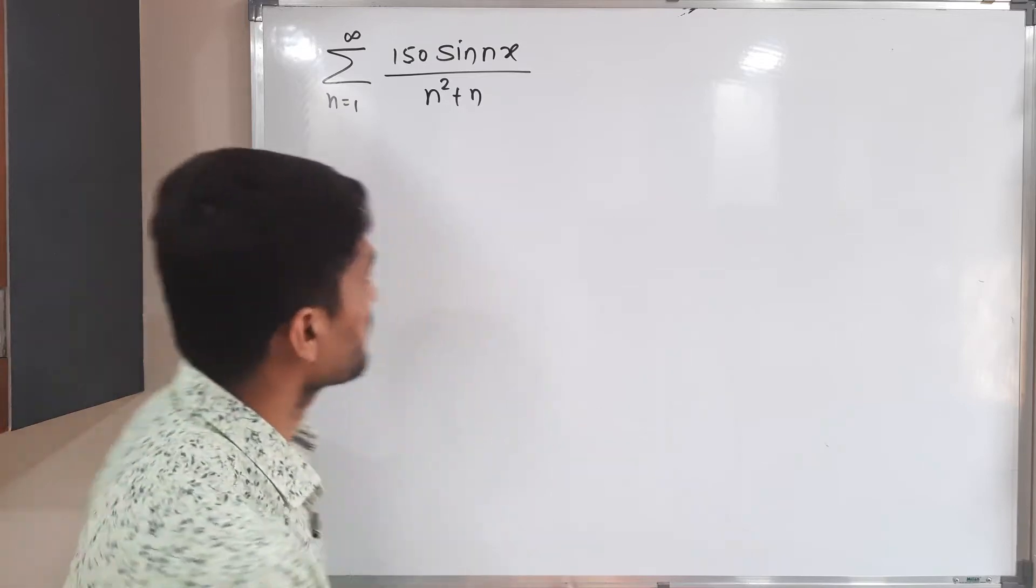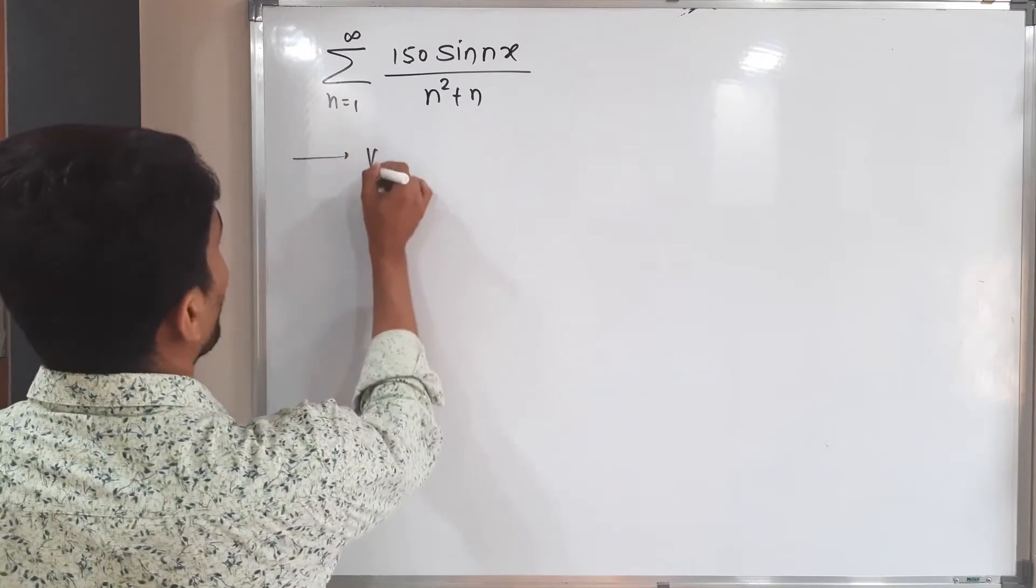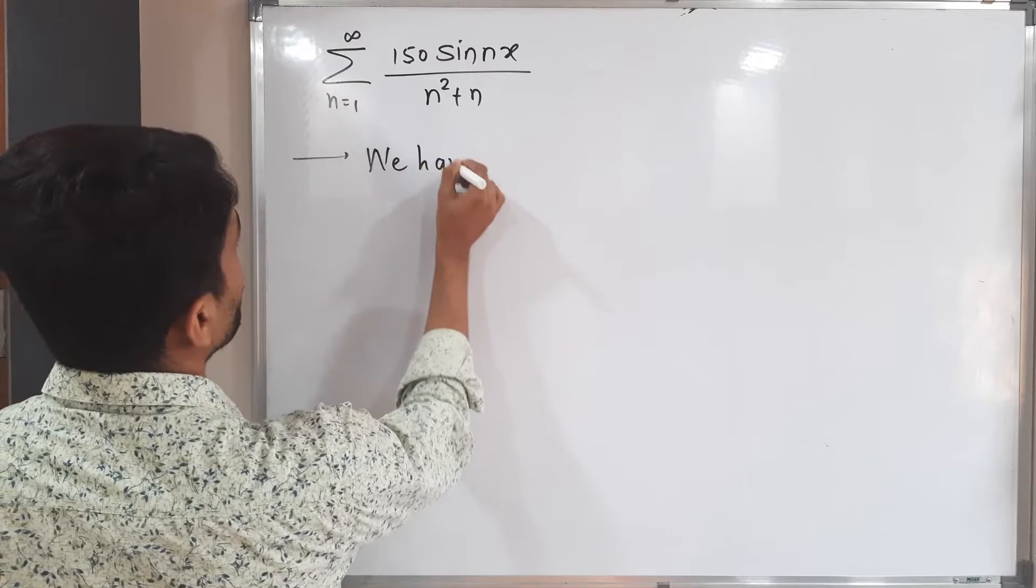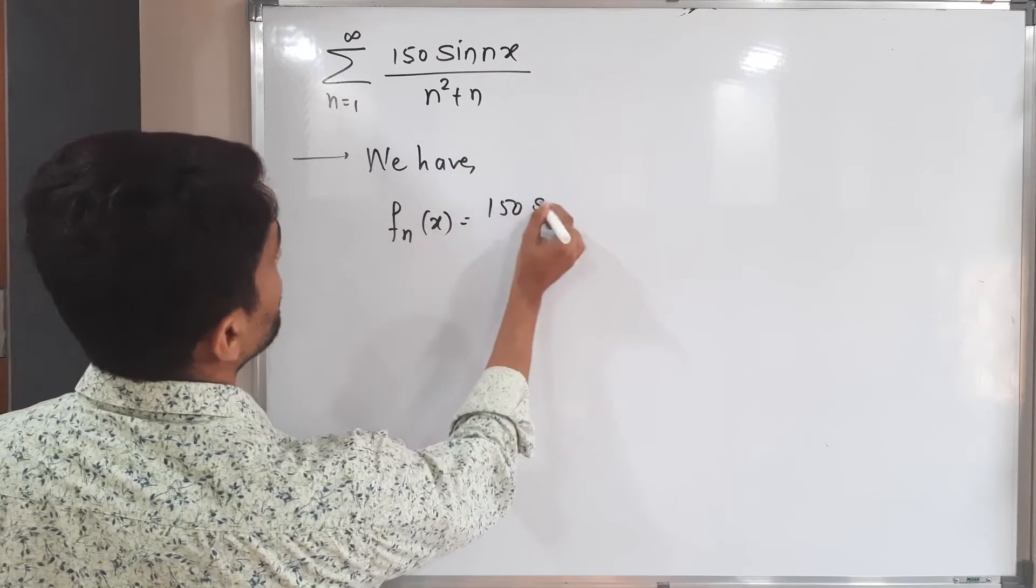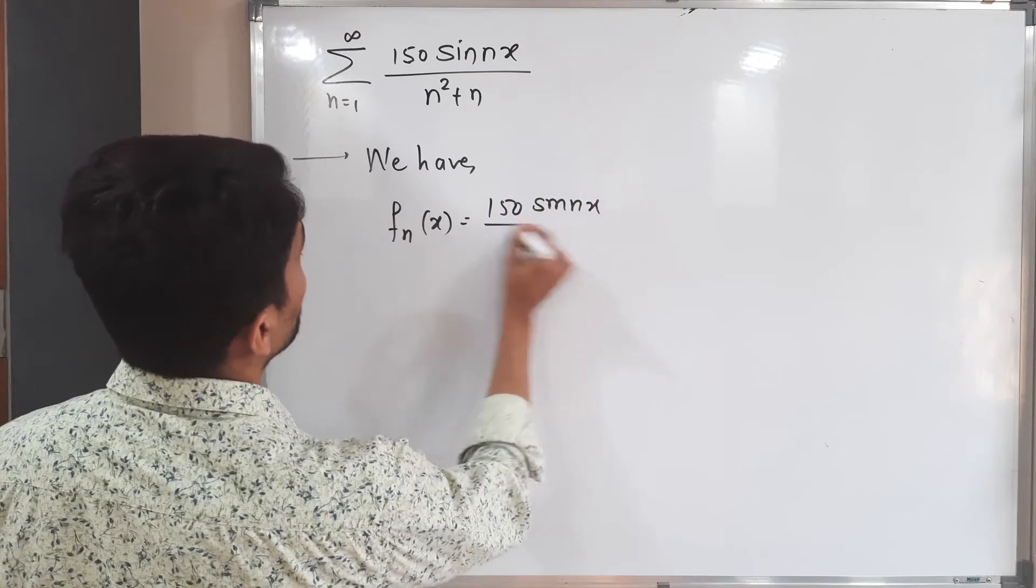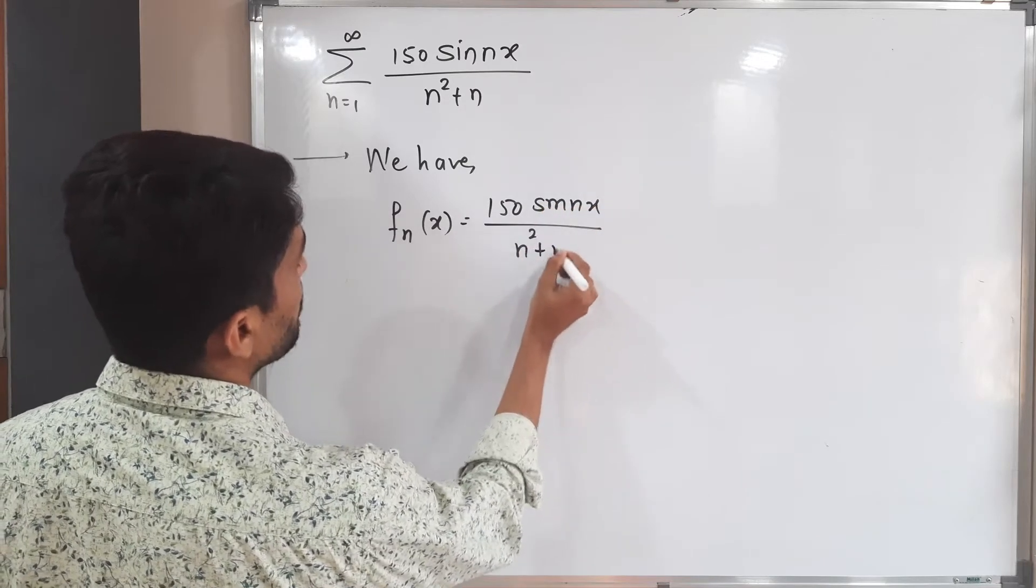What is f_n here? Let us write it first. We have f_n of x is equal to 150 sine nx divided by n square plus n.